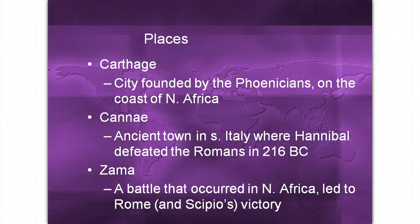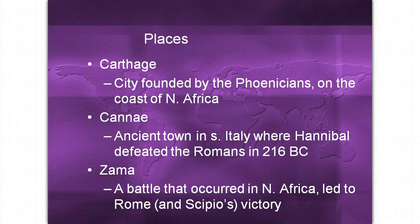Carthage is a city founded by the Phoenicians, located on the coast of North Africa. Cannae is an ancient town in southern Italy where Hannibal defeated the Romans in 216 B.C. Zama is a battle that occurred in northern Africa and it led to Rome and Scipio's victory against Hannibal.